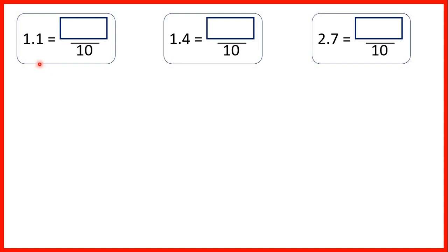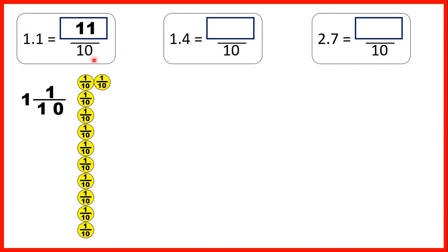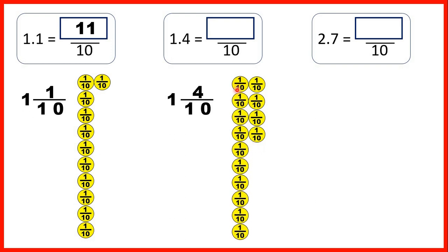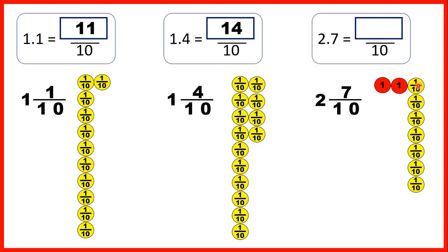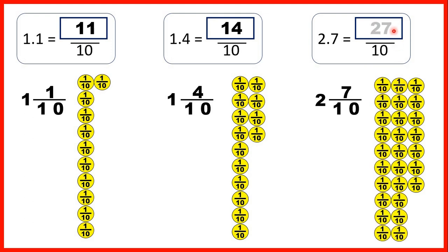We can also show what we've done using place value counters. 1.1 means we have one whole and one tenth, so we can have one whole place value counter and one tenth place value counter. But the question asked us to write that as a fraction over ten, so we exchange one whole for ten extra tenths, meaning that we have eleven tenths altogether. 1.4 is one and four tenths — one whole and four tenths as our place value counters — but again, the one whole can be exchanged for ten more tenths, giving us fourteen tenths altogether. 2.7 is two wholes and seven tenths, so we can show two whole place value counters and seven tenths, but each of our two wholes can be exchanged for ten more tenths, giving us twenty-seven tenths altogether.